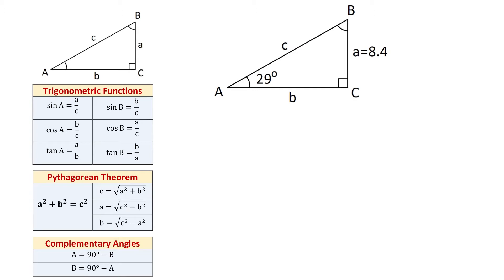Below we have the trigonometric functions sine, cosine, and tangent of angle A, and sine, cosine, and tangent of angle B. If we work with angle A, then sine of angle A is the opposite side A divided by hypotenuse C, cosine of angle A is the adjacent side B divided by hypotenuse C, and tangent of angle A is the opposite side A divided by the adjacent side B.